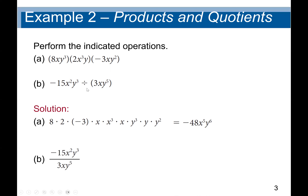Now let's look at division, which uses the same concept as multiplication — we divide like terms together. Negative 15 divided by 3 gives negative 5. x squared divided by x gives x. y cubed divided by y to the power 5 gives y to the power negative 2, since 5 is bigger than 3. When the base is the same and they are dividing, we subtract the denominator exponent from the numerator exponent. So we get negative 5x, then y to the negative 2, which by the reciprocal rule becomes 1 over y squared.